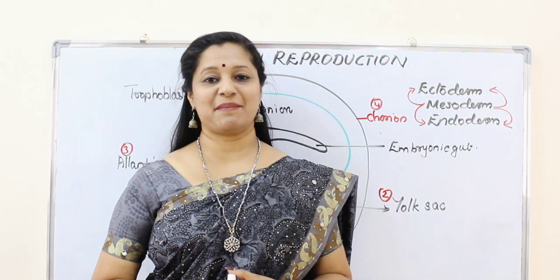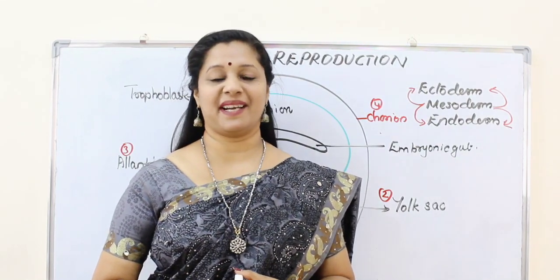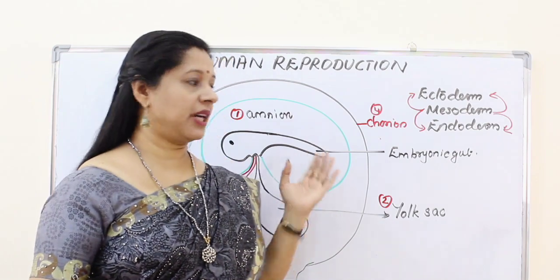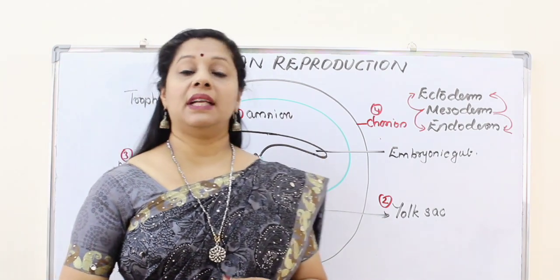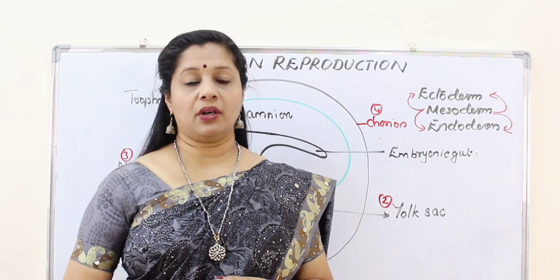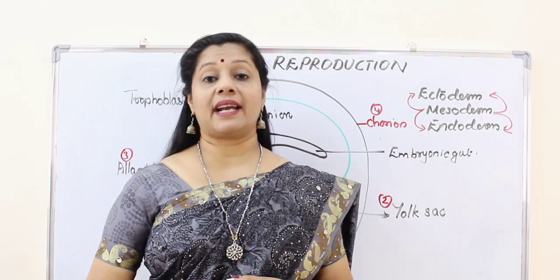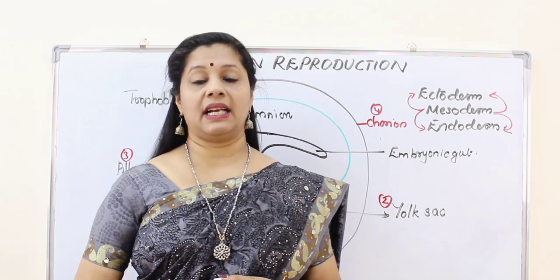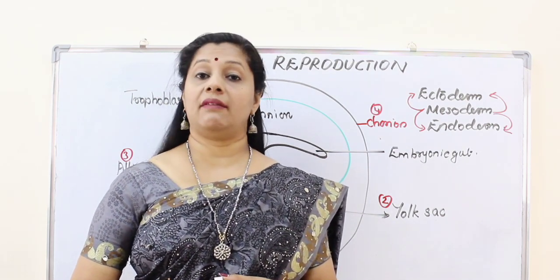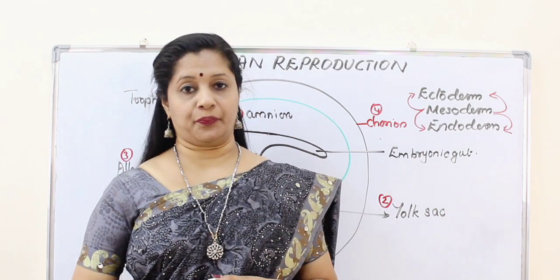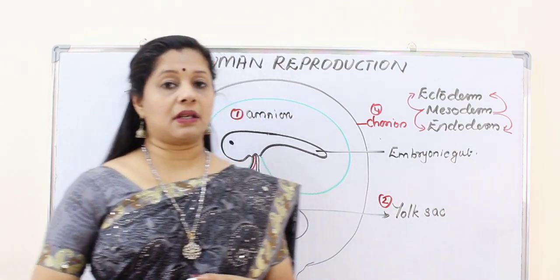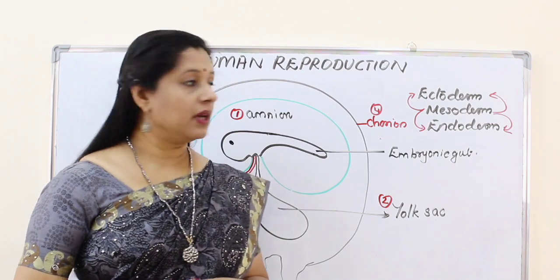Welcome to Biology My Passion. I am Soumya Hare Krishna. We are now learning the chapter human reproduction and we learned up to implantation. Today let us learn about some embryonic layers or extra embryonic layers which give protection to our developing embryo. There are four different protective layers in the embryo.